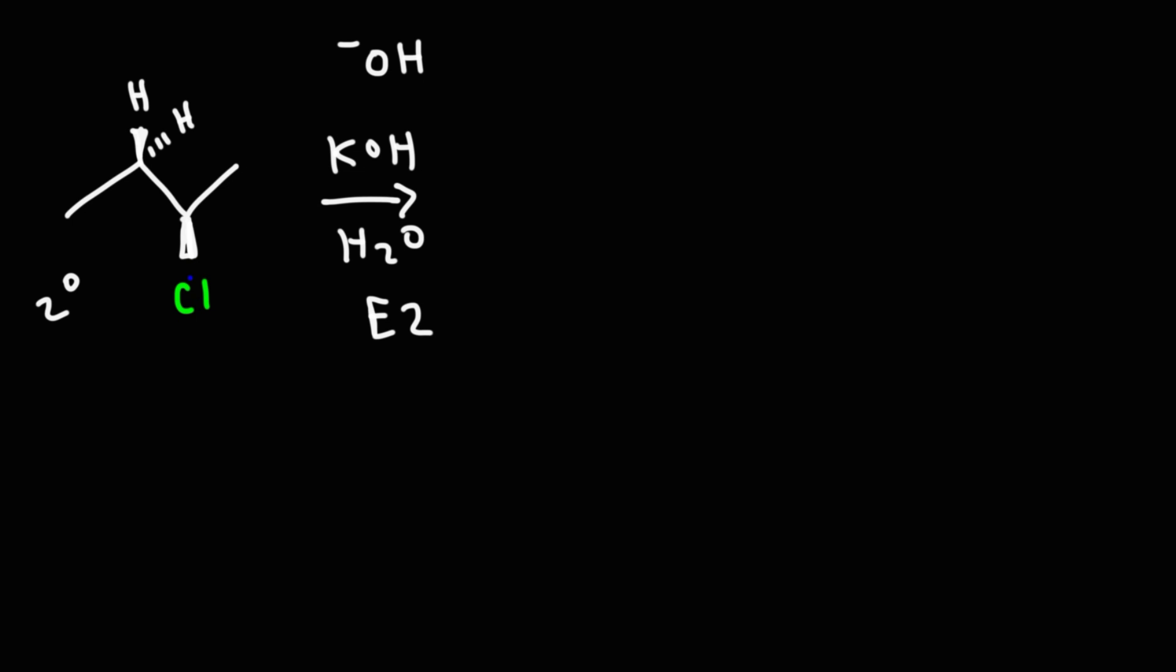Now because the chlorine atom is in the front, the base hydroxide is going to go for the hydrogen, the adjacent hydrogen, that's in the back. Because the E2 reaction requires an anti-elimination reaction. The base is going to go for the hydrogen that's anti with respect to the leaving group.